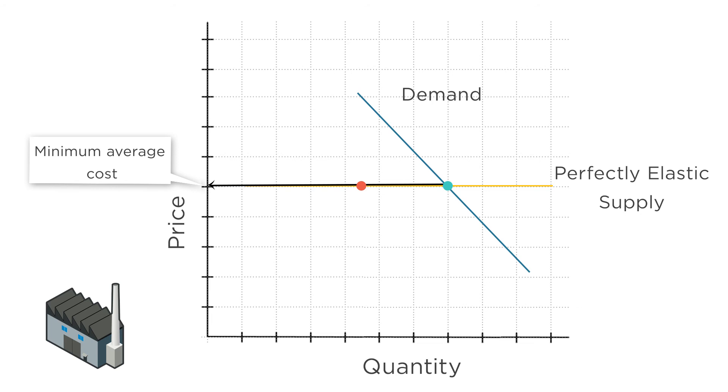So whether there are positive profits in a market and more firms enter, or there are losses in a market and existing firms exit, in the long run, firms are producing at the minimum average cost and all firms make zero profit.